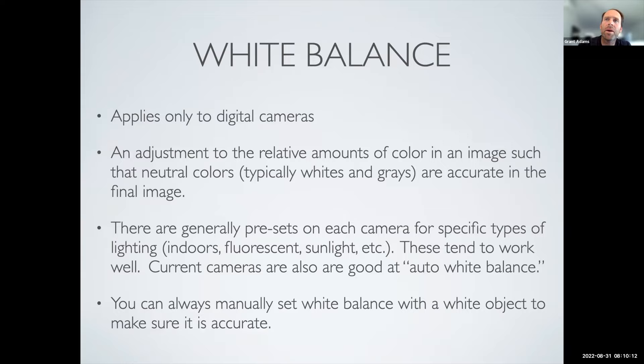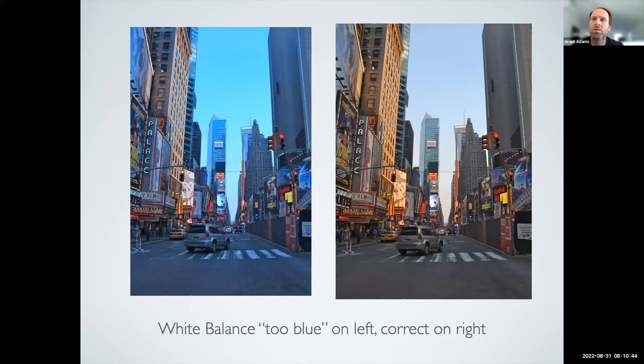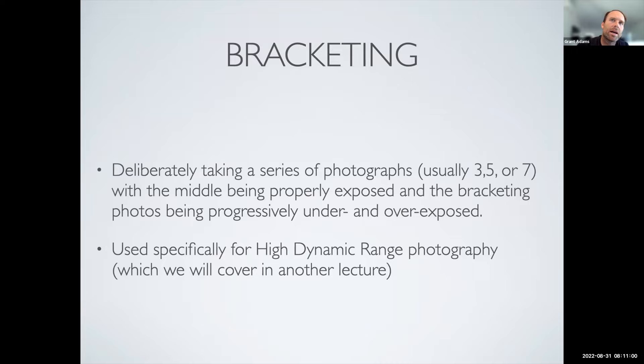White balance applies only to digital cameras and allows you to adjust what is considered white in a photo — how much blue or orange is in that white, whether it's warm, soft, or neutral. Most modern cameras do a great job of adjusting for light automatically. But you may have experienced taking a picture that looks like you're underwater because everything is too blue. Good news: it's an easy fix in Photoshop. You can do a little post-processing and tweak that white balance later.